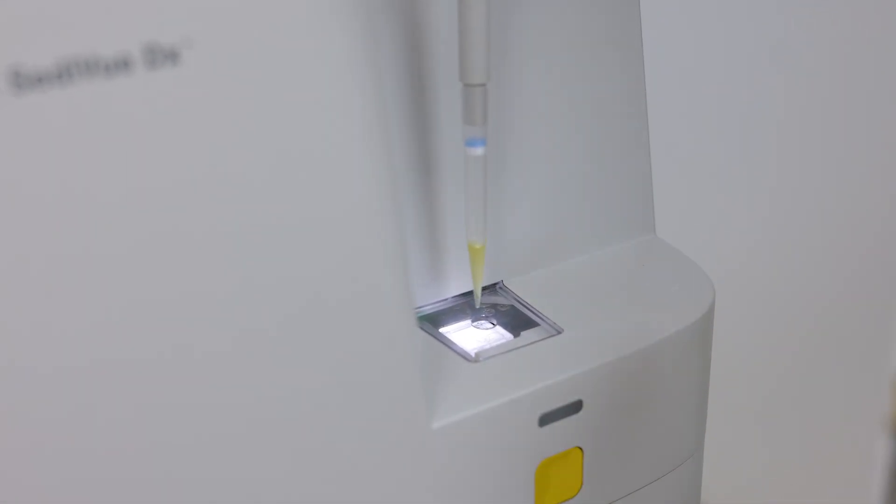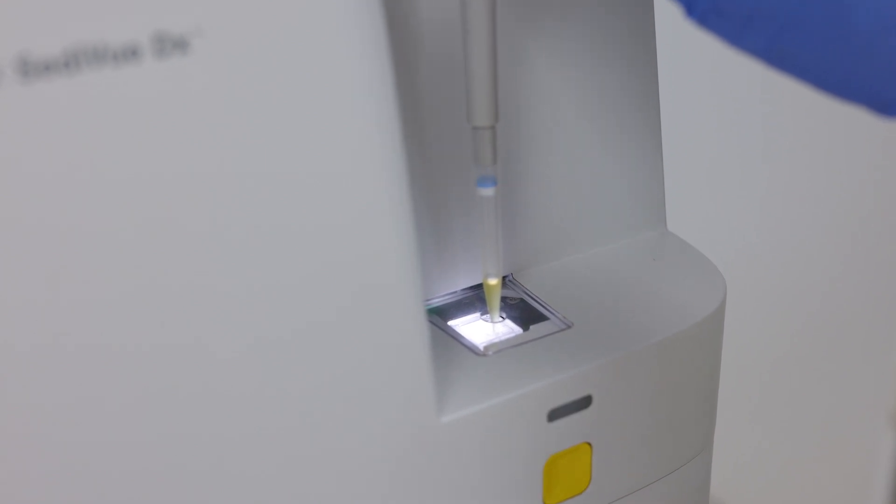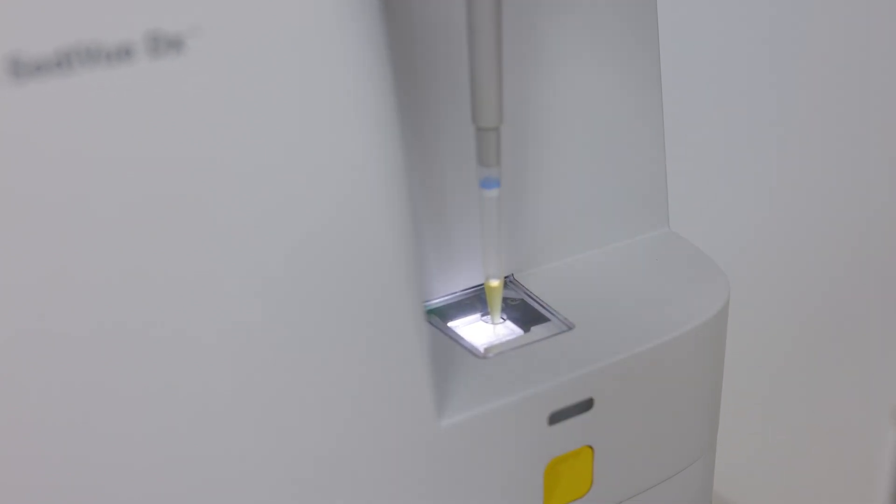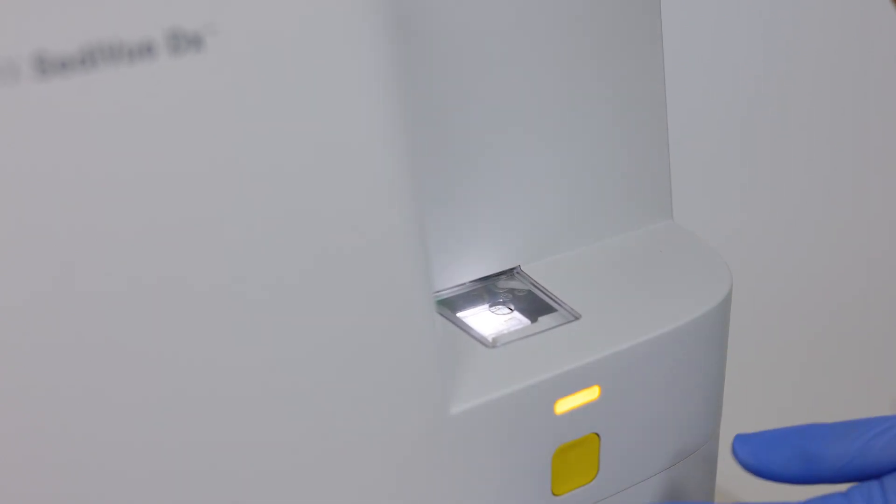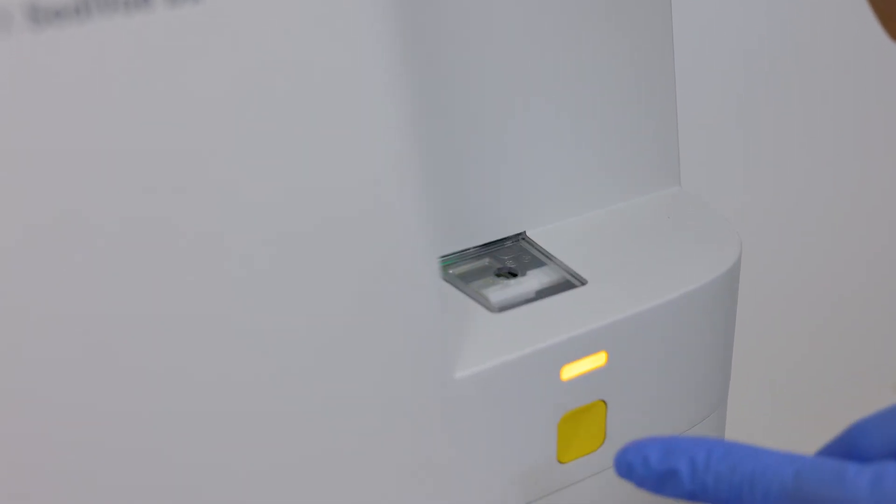Now that we have the correct amount of sample in our pipette, we're going to go ahead and place this into our test well window. There's a little notch in here and we're just going to slowly depress on that plunger to make sure that we get the correct amount of sample in our test well. And then we're going to remove that and press the start button.